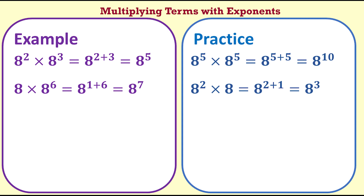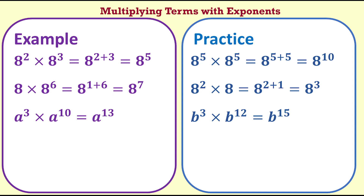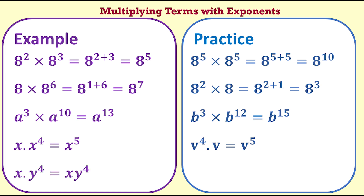Once you understand what is happening, you can just add the exponents. a to the 3 times a to the 10 equals a to the 13. b to the 3 times b to the 12 equals b to the 15. x·x to the 4 equals x to the 5. v to the 4 times v equals v to the 5. x·y to the 4 is x times y to the 4 — note that the 4 only applies to the y, not the x. As the bases are different, we do not add the exponents. m to the 2 times n to the 3 is m to the 2 times n to the 3.